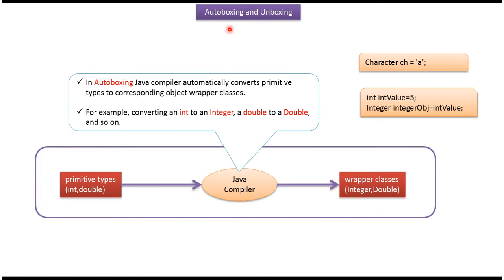Hi, in this video tutorial I will cover autoboxing and unboxing. In autoboxing, Java compiler automatically converts primitive types to corresponding object wrapper classes. For example, int will be converted to Integer object, and double will be converted to Double object.